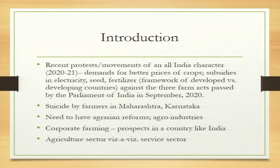Another critical issue is farmer suicide. In states like Maharashtra and Karnataka, we come across numerous cases of farmer suicide. The main reasons are: inability to pay back loans, difficulty getting loans, and high interest rates making it hard to cope with commercial crop farming. There is a dichotomy between growing food grains and commercial crops, and sometimes farmers are unable to cope with the demands of commercial crops.